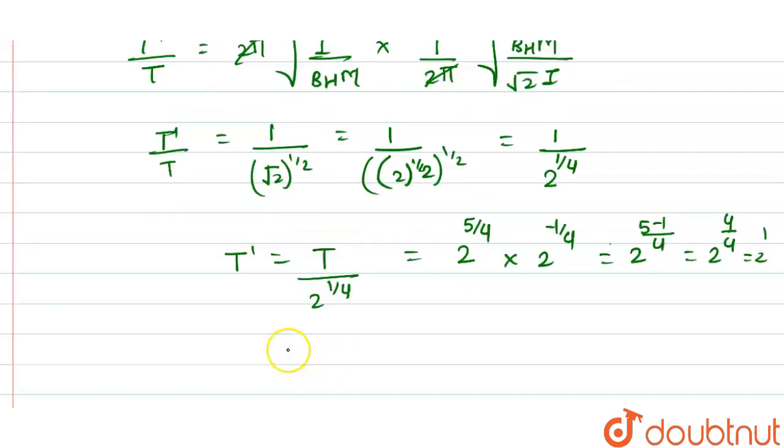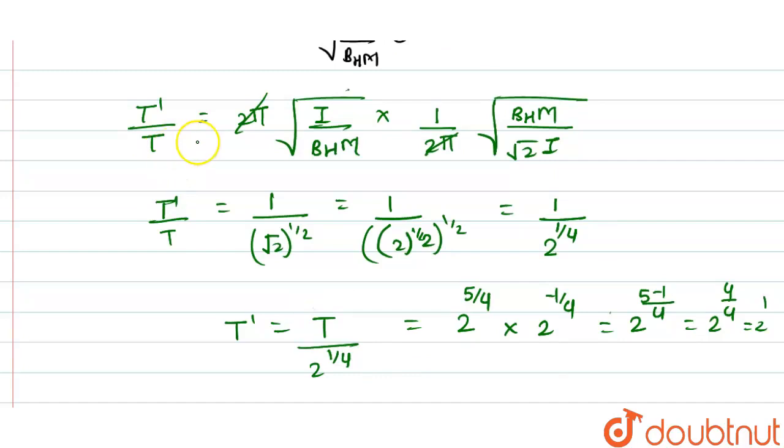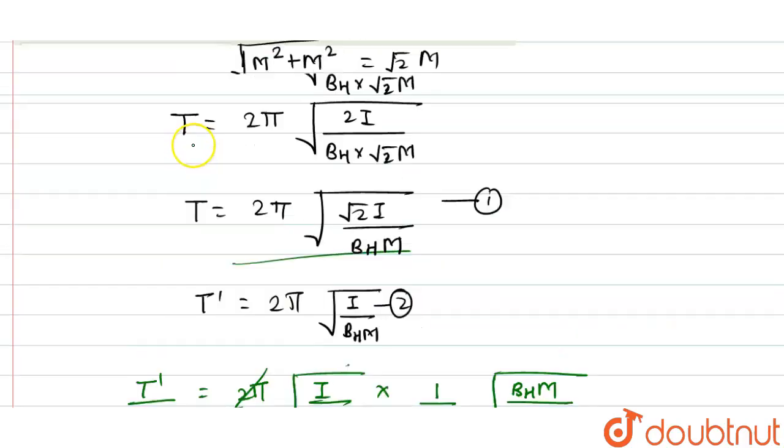The new time period of oscillation is 2 seconds. The correct option is option C.